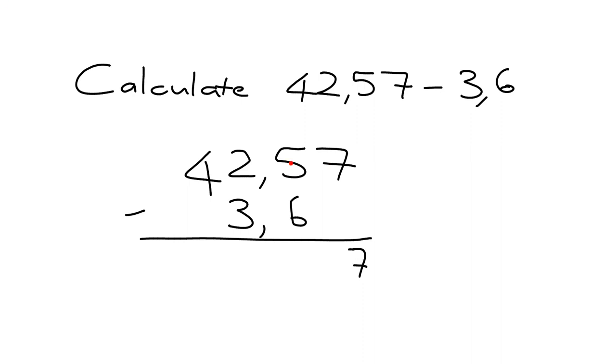Over here, I have 5 minus 6. This is bigger, so I can't do that subtraction. What I'm going to do is go and take one of those, bring it over to here, and it becomes 10 of them. So it's 15 minus 6, which is 9.